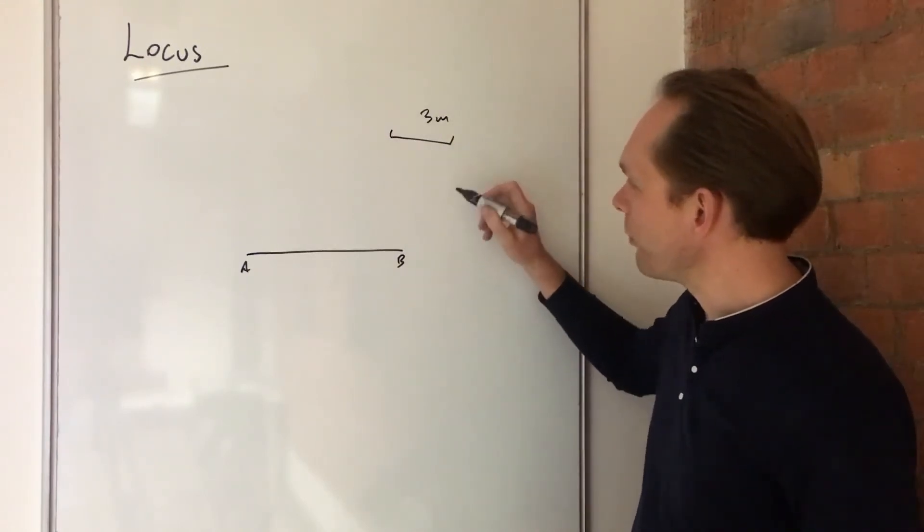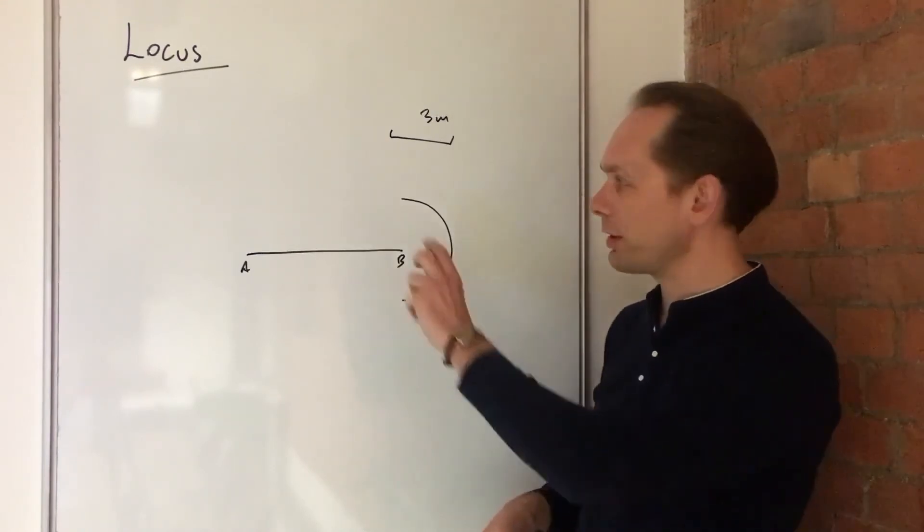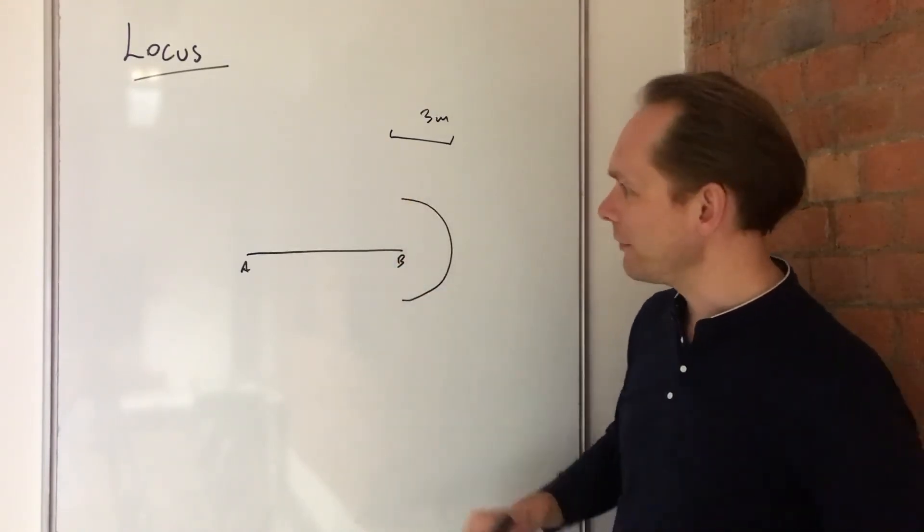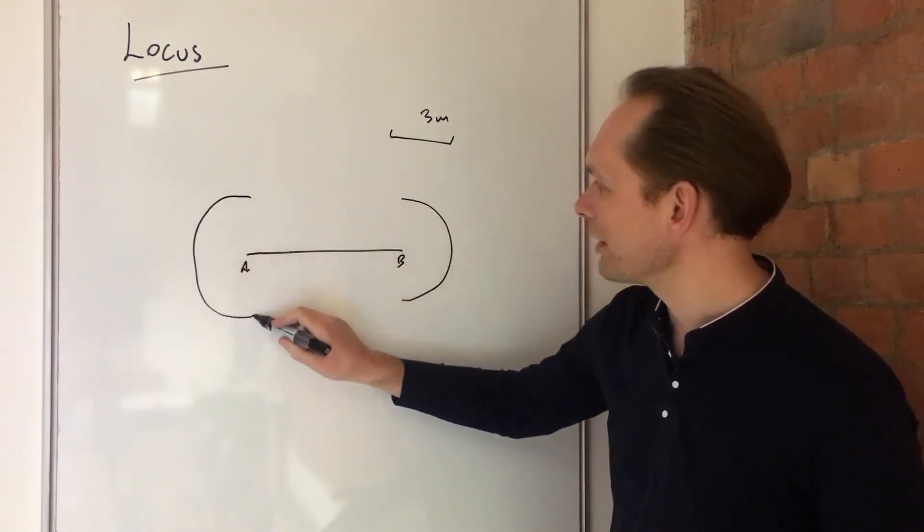So three meters away from point B is going to be a curve like this, like a semicircle. Okay, and you do that with compasses and do it better than I've just done it. And likewise, three meters from A is going to be a semicircle in much the same fashion.